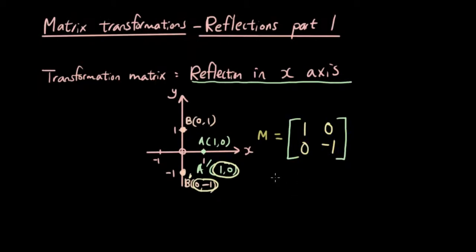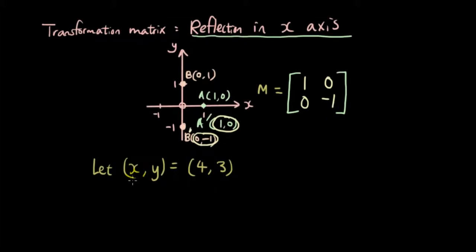Now we're going to test it using a random point. So we're going to make a point. Our original point is at x is 4 and y is 3. Now in order to work out the image, what you do is you multiply M by x and y in a matrix. And that will give us x dash y dash, which is the image.